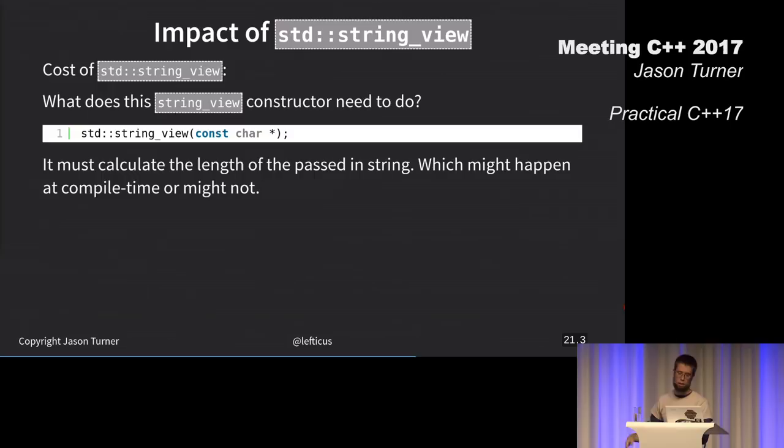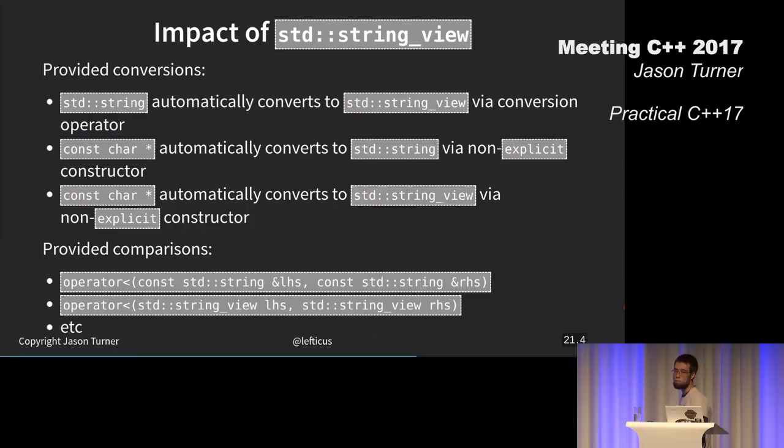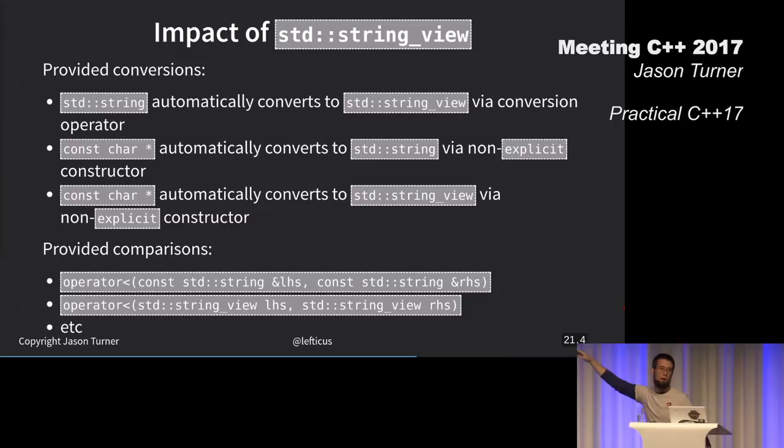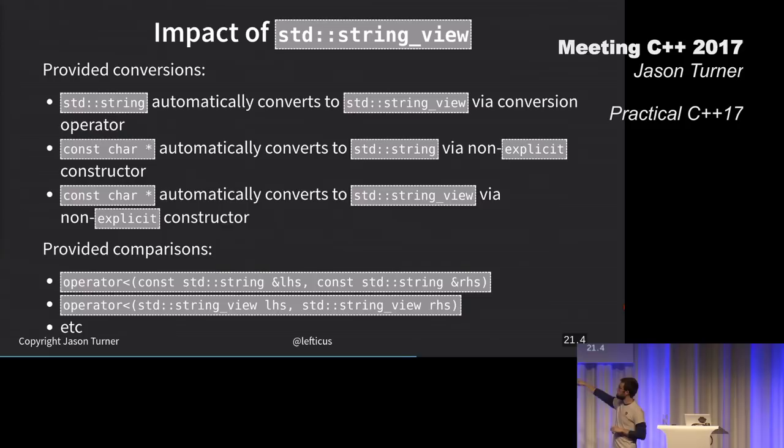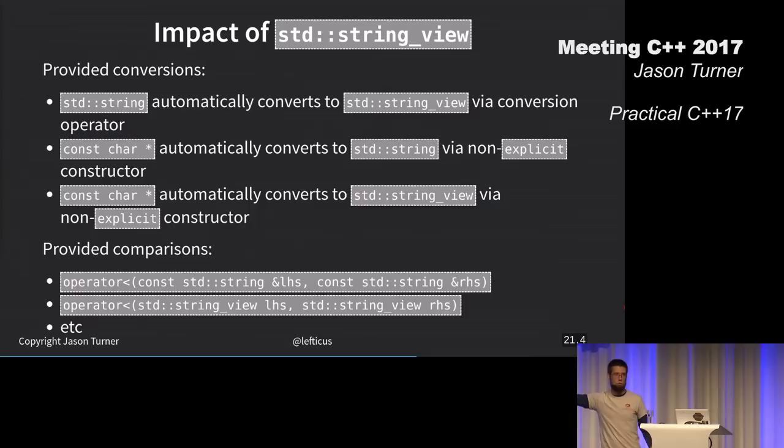This is my chart of what we need to be aware of now. Strings can automatically be converted to string views via conversion operator. Const char stars can automatically convert to a string via a non-explicit constructor. To me, this is one of the biggest mistakes in the standard library, that we can implicitly convert a const char star to a standard string. I'm getting nods. I'm glad people are agreeing with me.